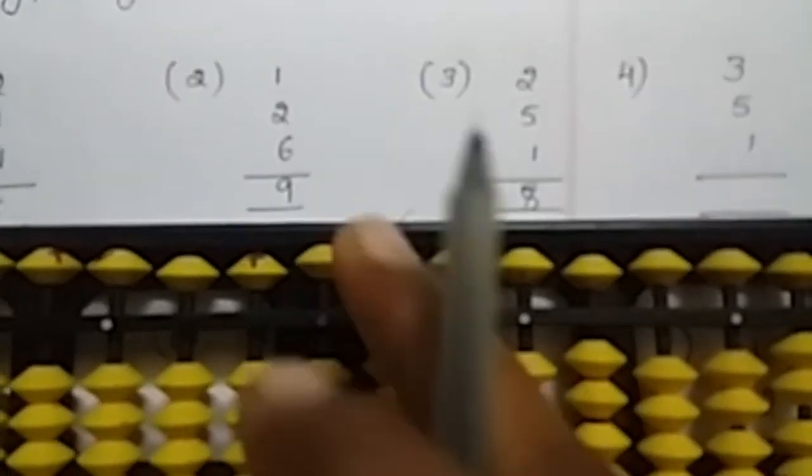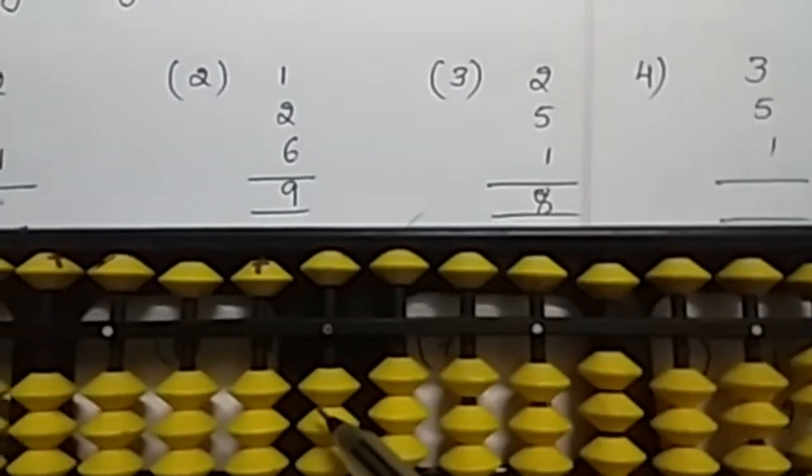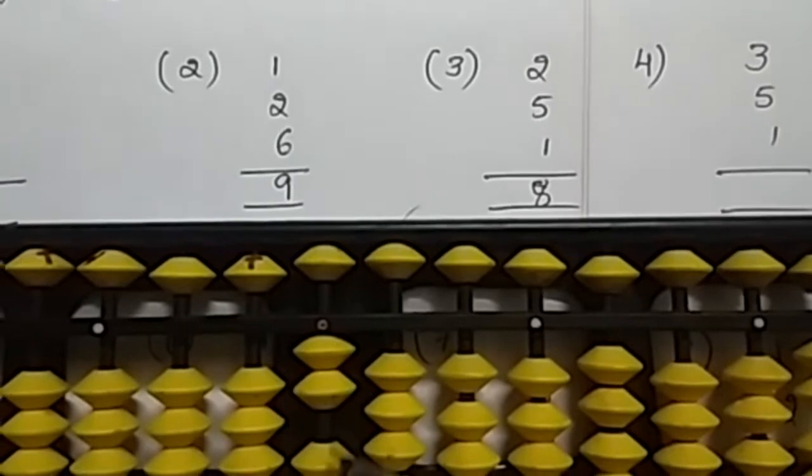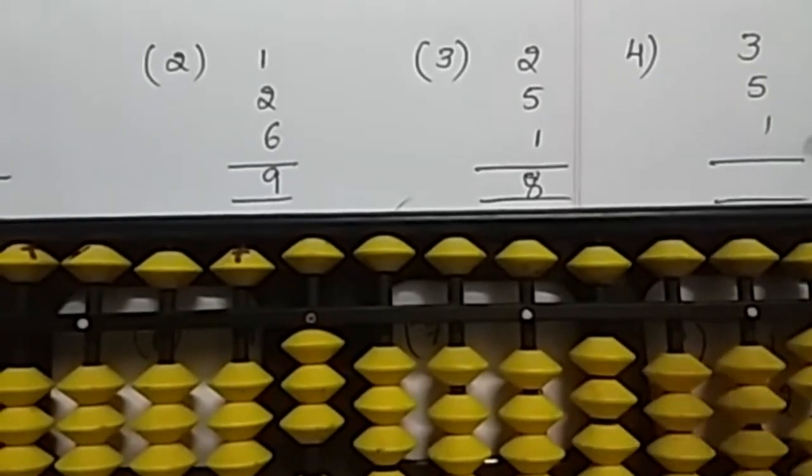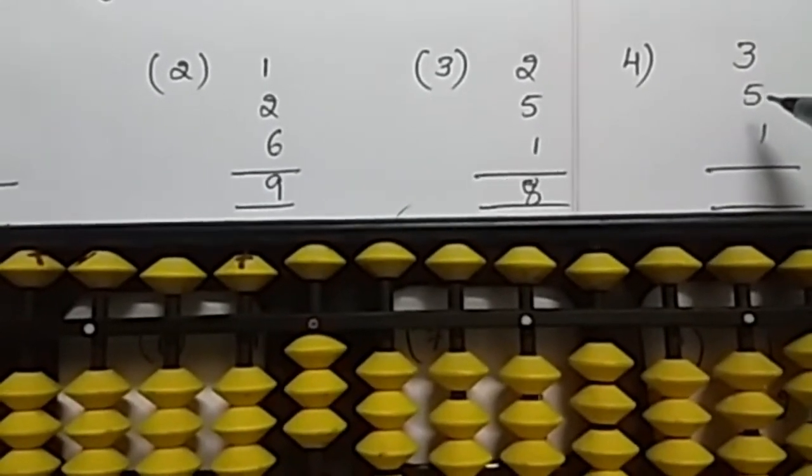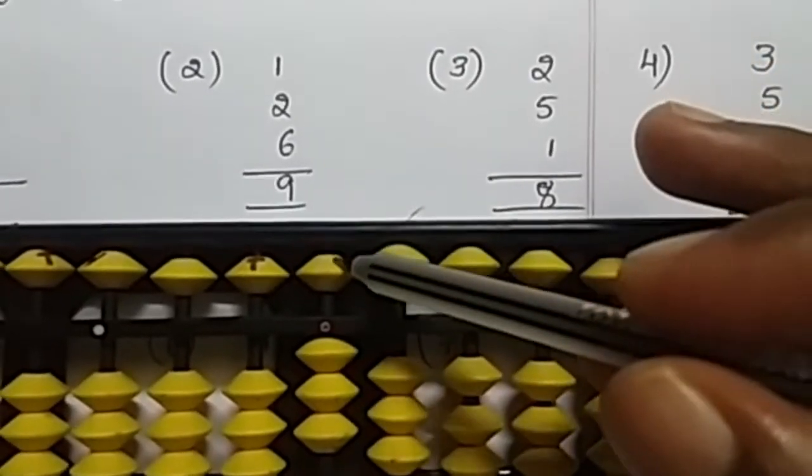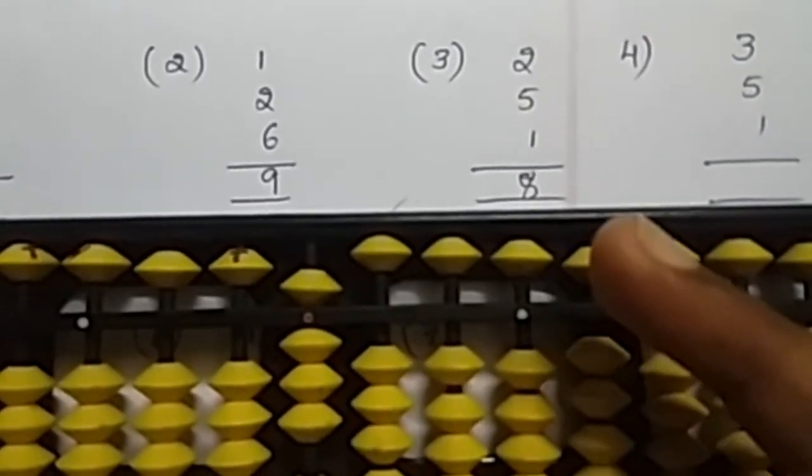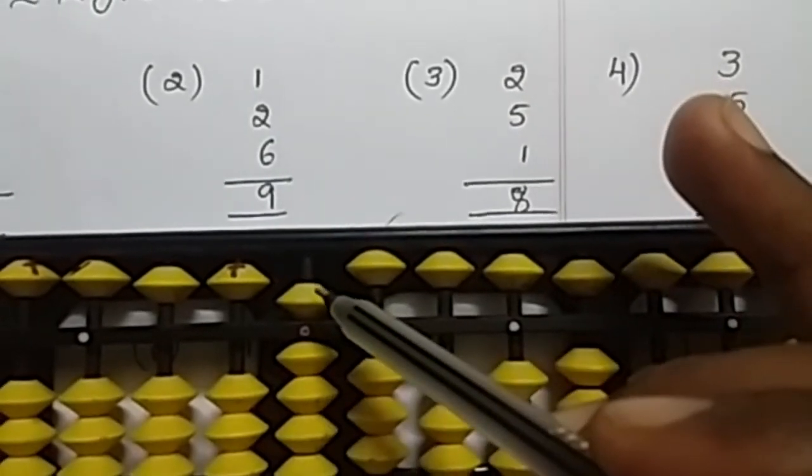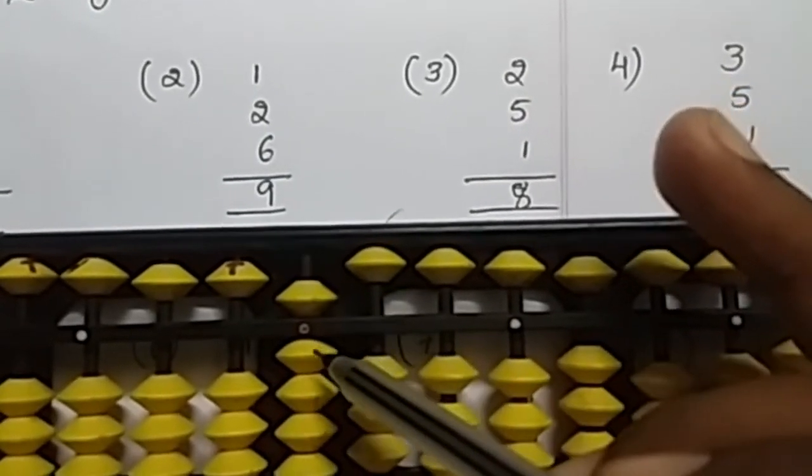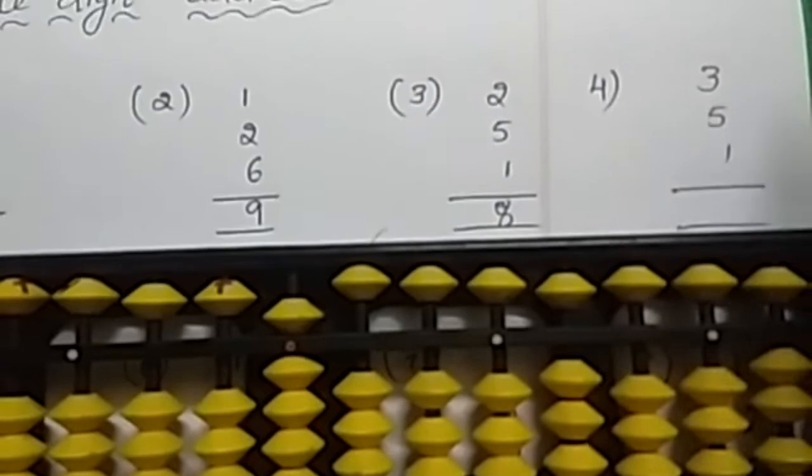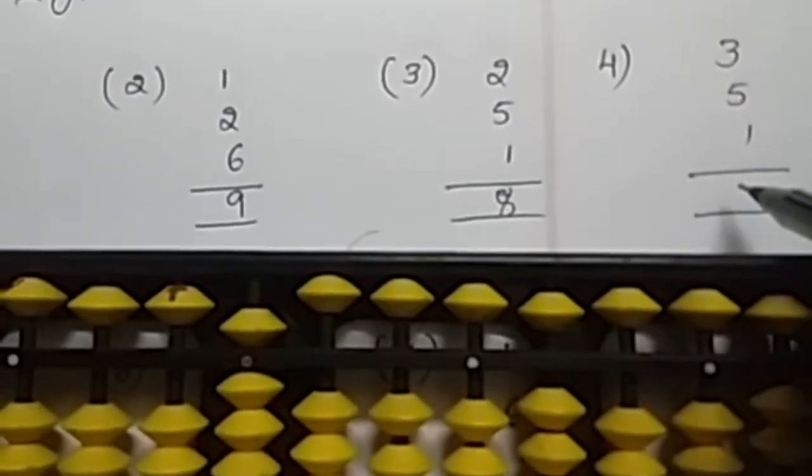Next, three one two three five: one, five six seven eight nine. Like that we have to do single digit additions by using abacus.